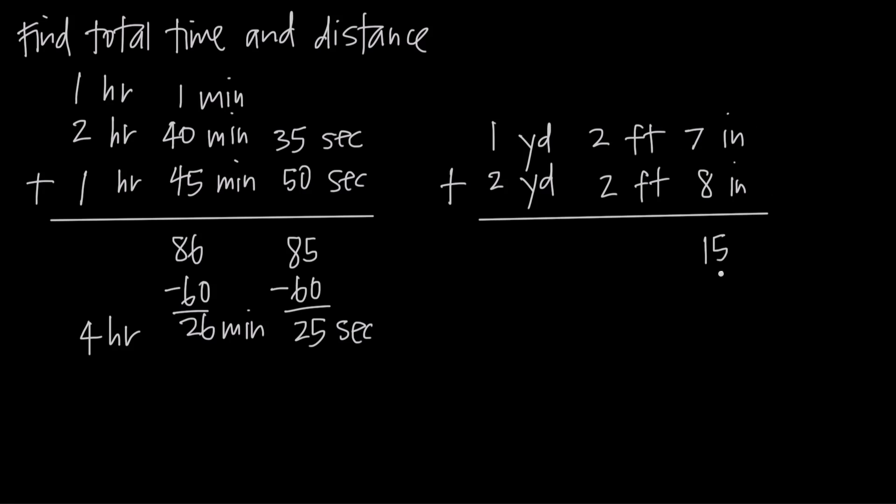But we know there are 12 inches in a foot, so we subtract 12 and add 1 foot to the feet column, because 12 inches equals 1 foot. 15 minus 12 gives us 3 inches.